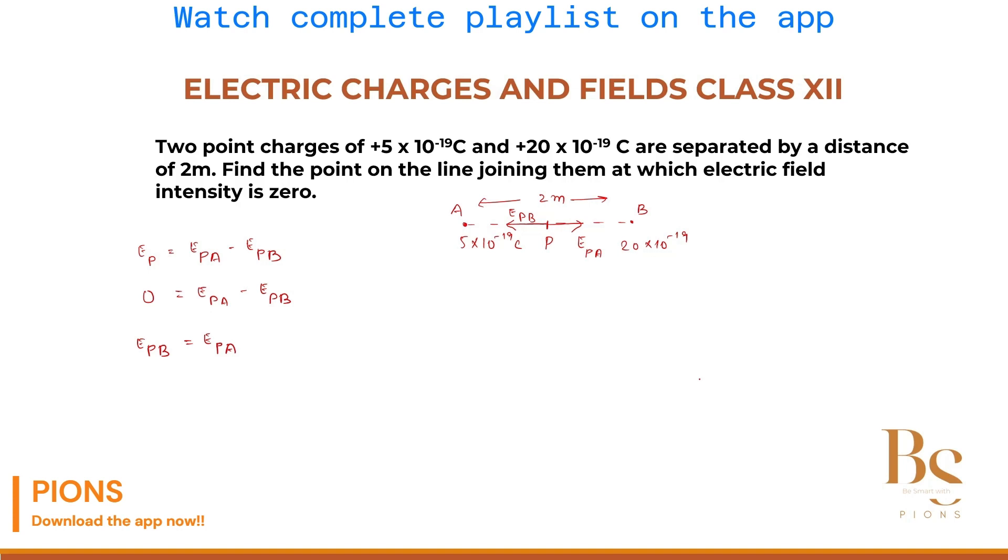Even if you start your derivation of this problem here, that is also fine. Logically, if something is cancelling out, if two vectors are cancelling out, then the only thing that can happen is maybe they both are in opposite direction and same in magnitude.